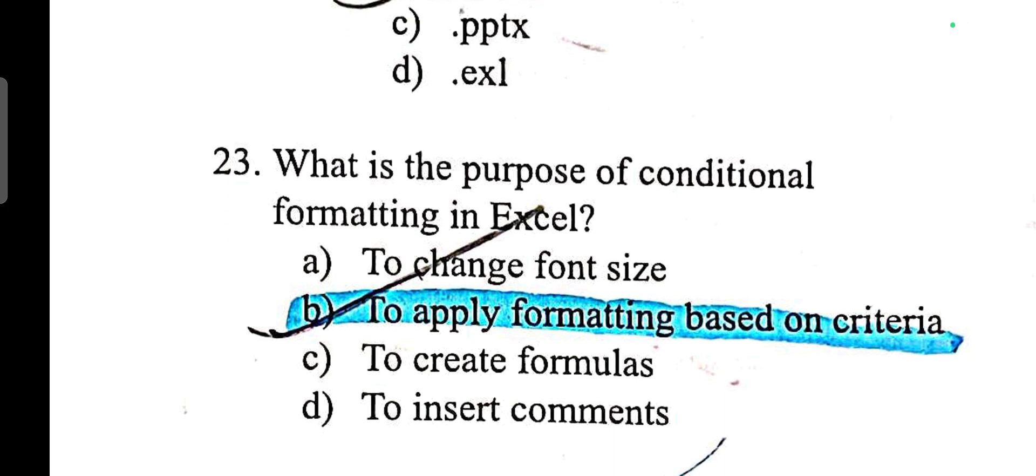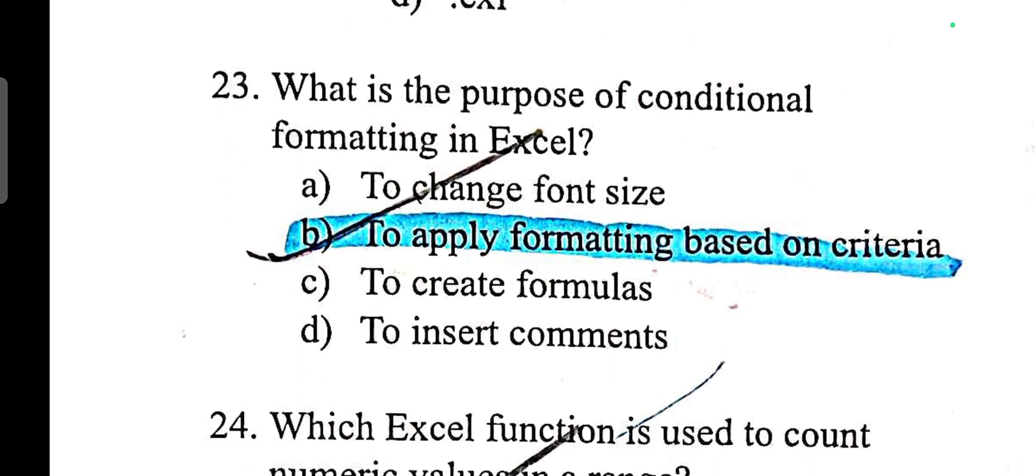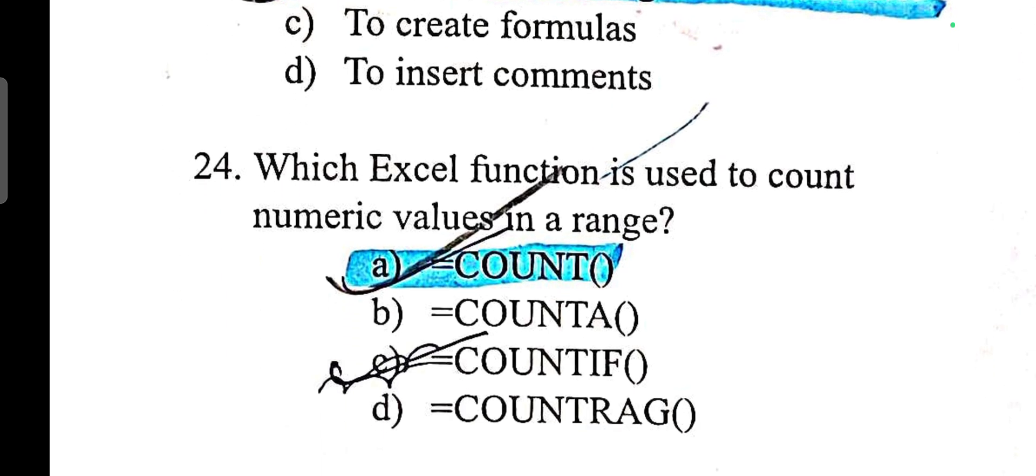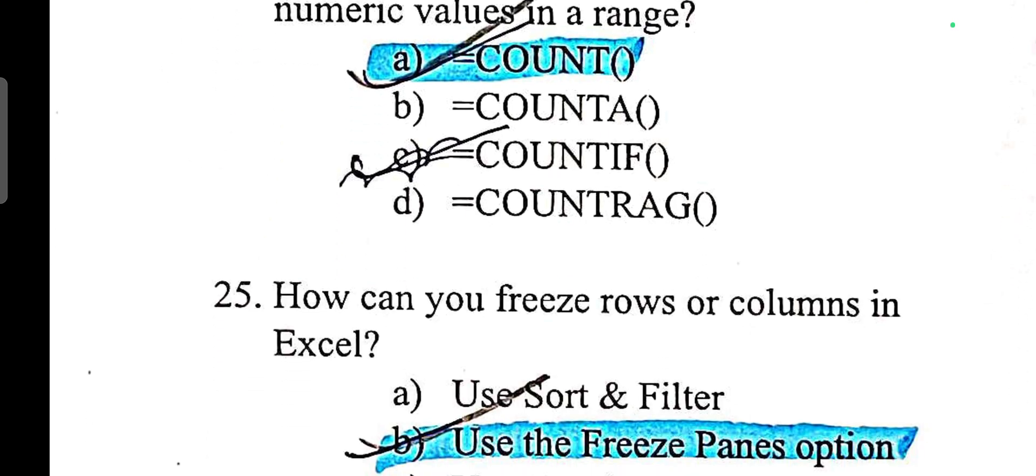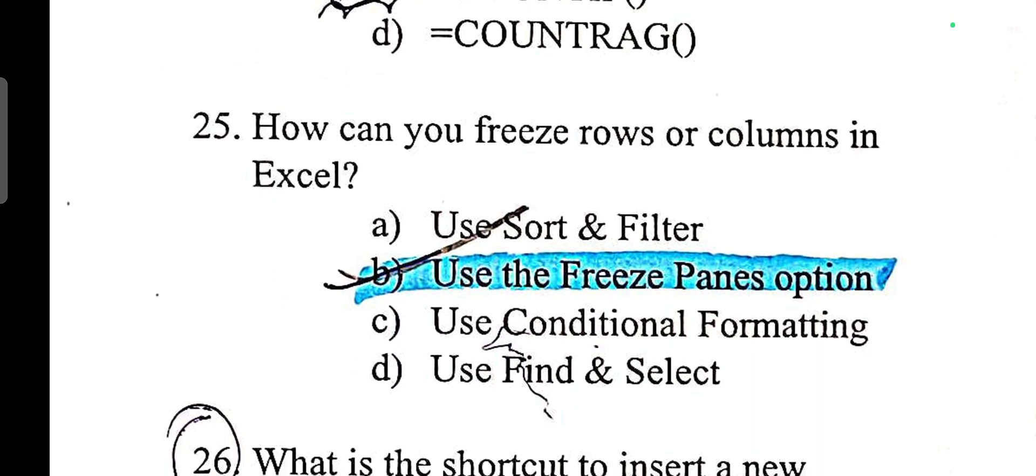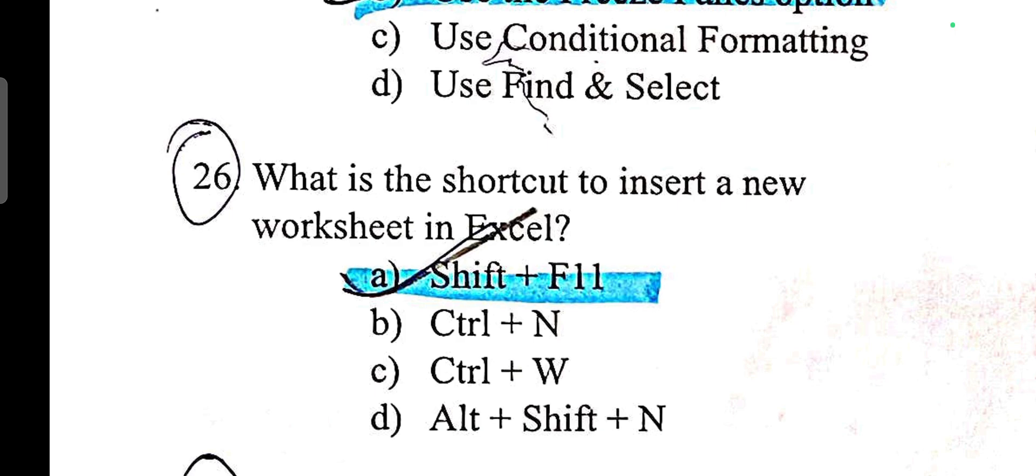What is the purpose of conditional formatting in Excel? To apply formatting based on criteria. Which Excel function is used to count numeric values in a range? Count. How can you freeze rows or columns in Excel? Use the freeze panes option. What is the shortcut key to insert a new worksheet in Excel? Shift plus F11.